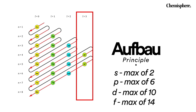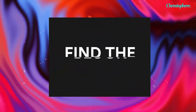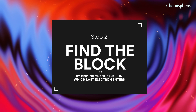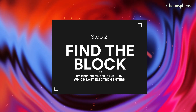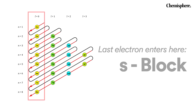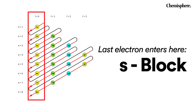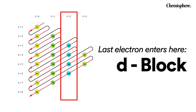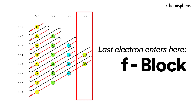Once we have filled up all the electrons in the given configuration, it's time to find out the block. The easy step to find the block of the element is to see what subshell the last electron is filled in. If the last electron fills up in s then it is an s block element, if in p then it's a p block element, if in d then it is a d block element, and if in f subshell then it is f block.